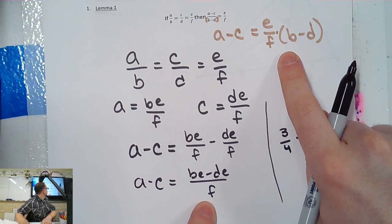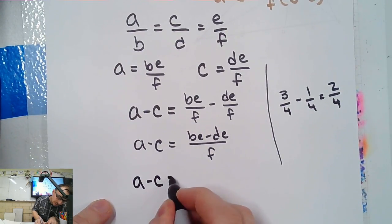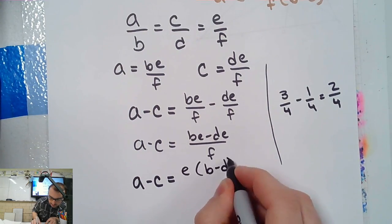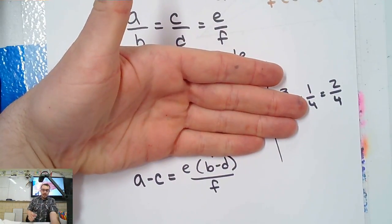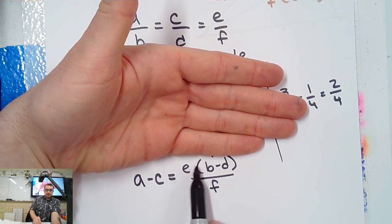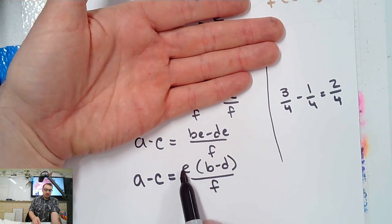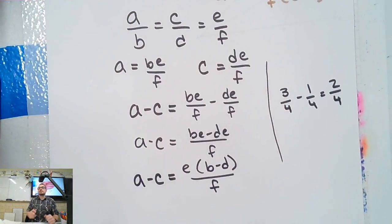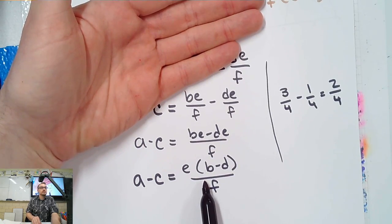Now, to get this to look like this, I need E and F to be on their own and B and D over on the side. So what I'm going to do is called pulling out — it's a valid strategy in math. It's the reverse of distribution. If I were to go backwards: E times B minus E times D gets me there. The undo of that is pulling out — just like multiplying and dividing cancel each other, distribution and pulling out are opposites. So I've pulled out an E from both.